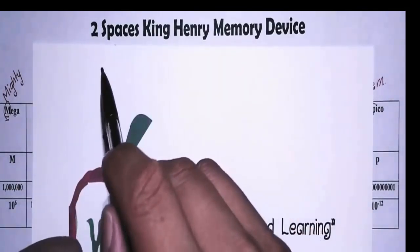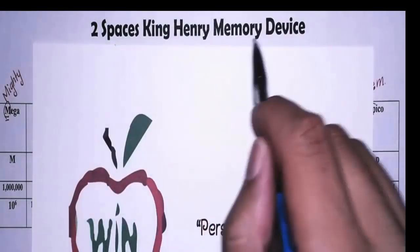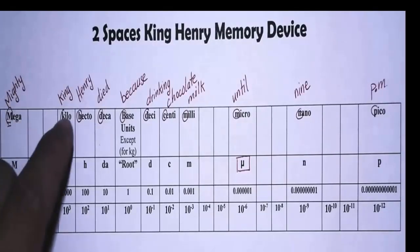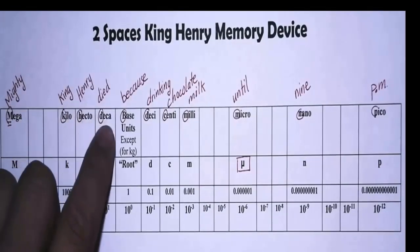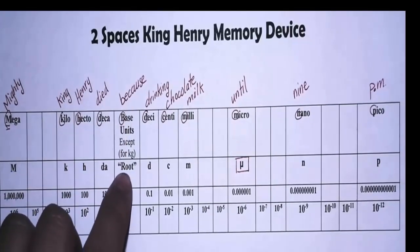The name of this memory device is called Two Spaces King Henry Memory Device. Looking at the table, we have the name of the prefixes: mega, kilo, hecto, deca, and of course the base unit or the root, except for kilograms.